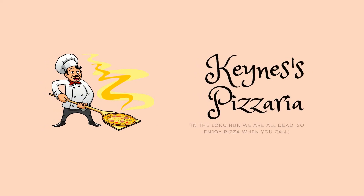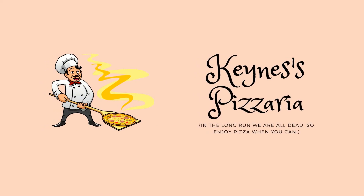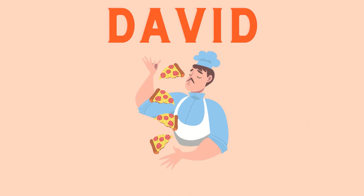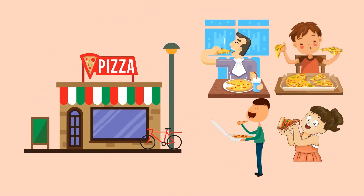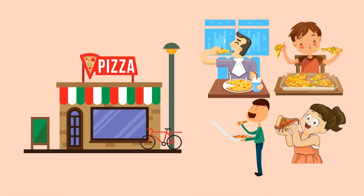So that was a lot. Let me show you an example. We have Keynes here who wants to start his own pizzeria. He hires his first worker, the young and skillful David. The pizzeria becomes a local sensation — every age group from kids to adults love the pizza.